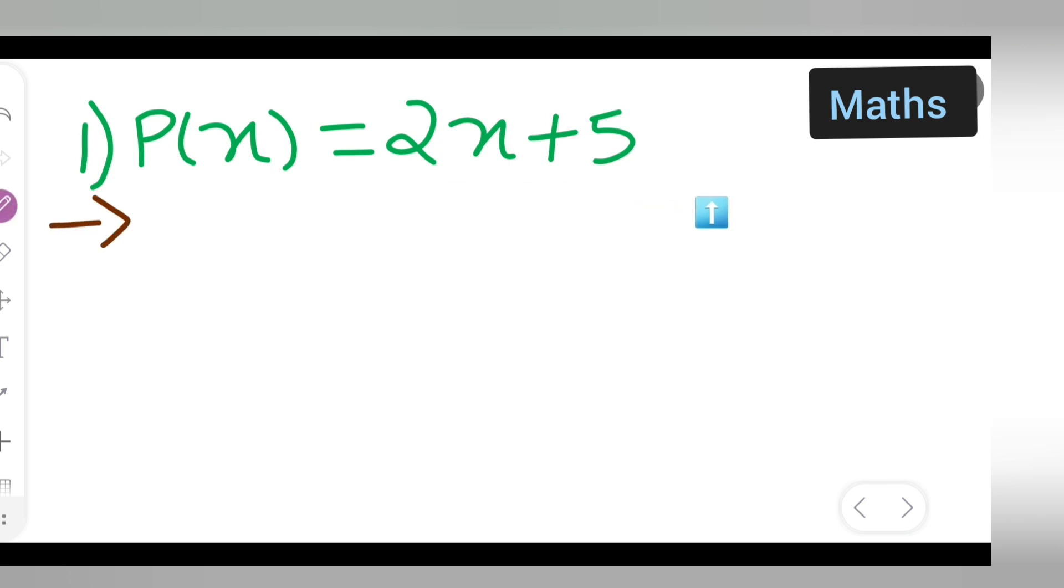Now, the first step is to write down P(x) = 0 because we need to find the zero of the polynomial. Next, you have to write down 2x + 5 as it is, and in place of P(x) you will plug in zero.